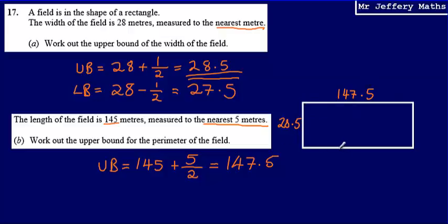And all that I now need to do to work out the perimeter is I'm just going to have to add all of the sides together. So I'm going to have to, I'm going to do 28.5 plus 28.5 and 147.5 plus 147.5 and add them all up.